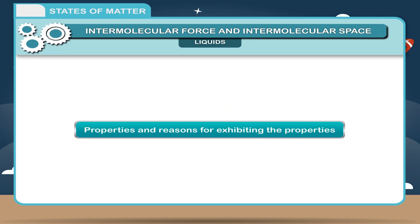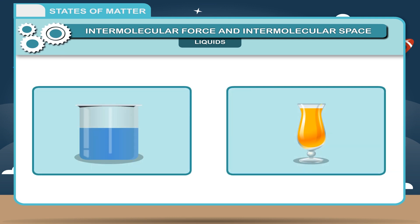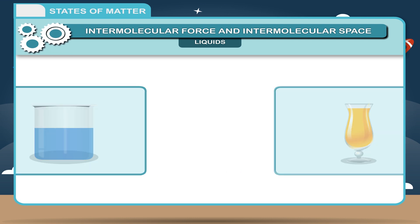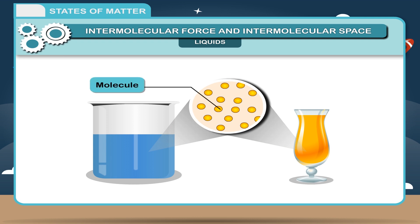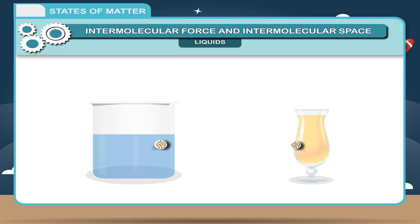Properties and Reasons for Exhibiting the Properties. Liquids don't have a definite shape, but take the shape of the container in which they are kept. Reason: As molecules of liquids are not tightly packed, they can easily shift and adjust by taking the shape of the container in which they are kept. Not being compact, liquids don't have a fixed shape.